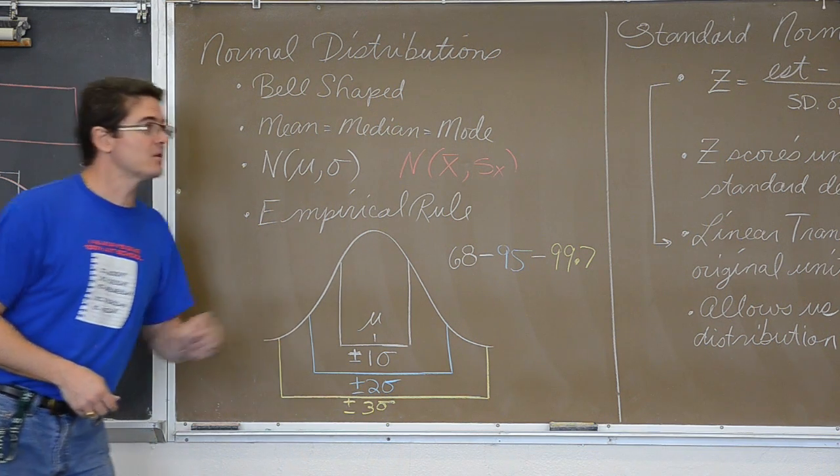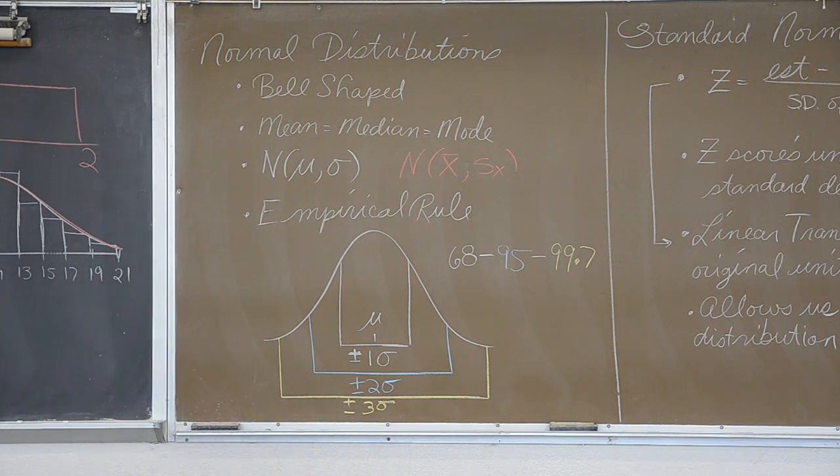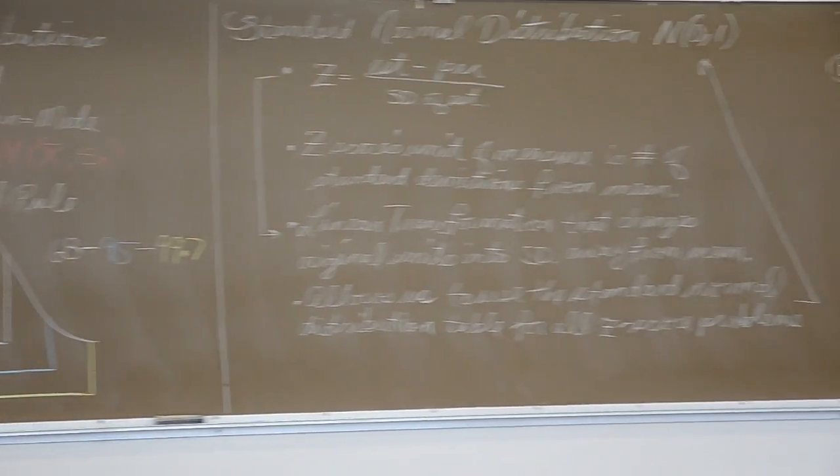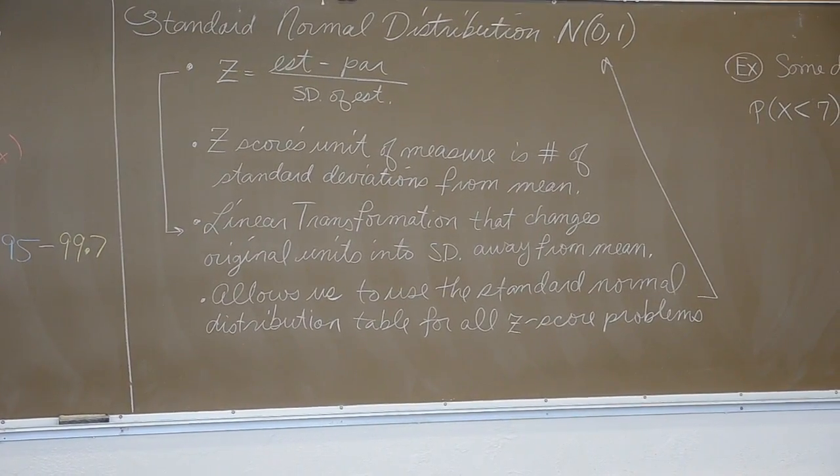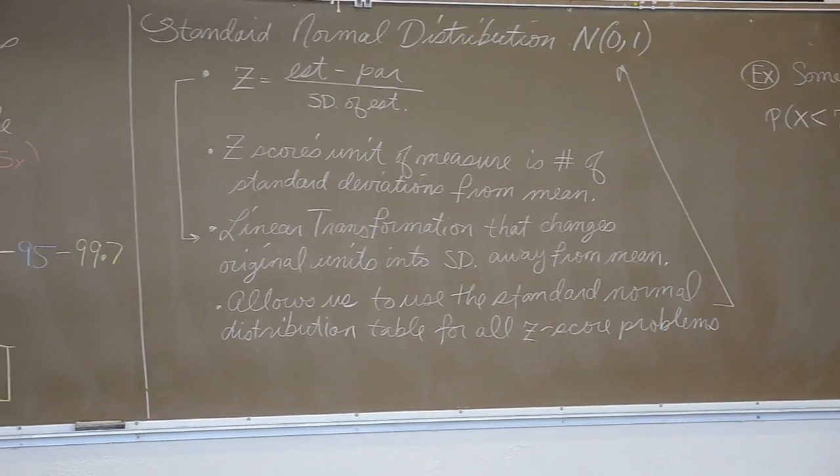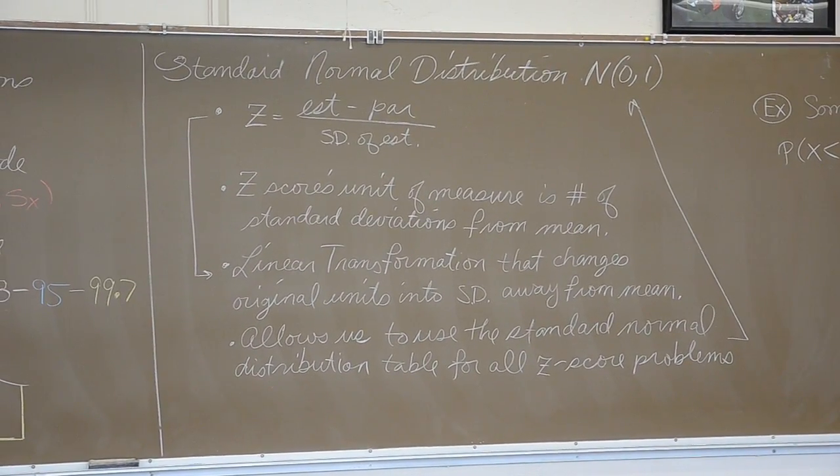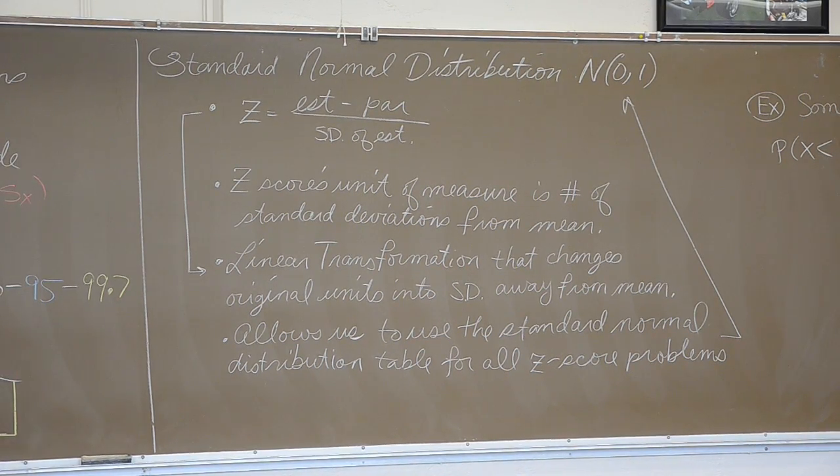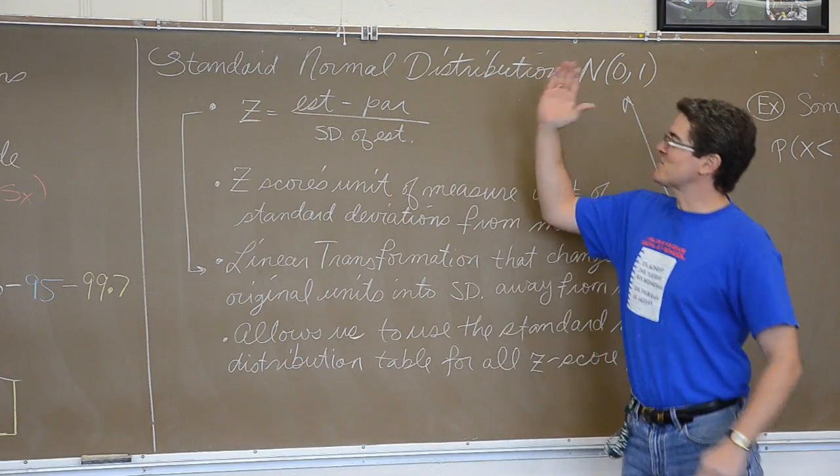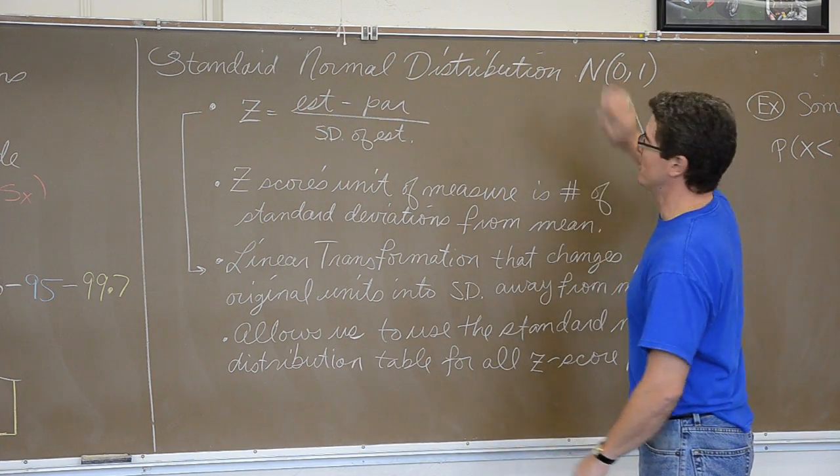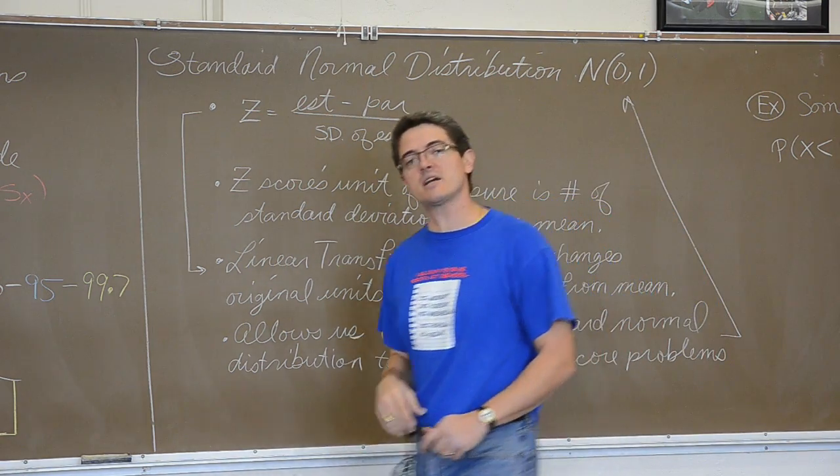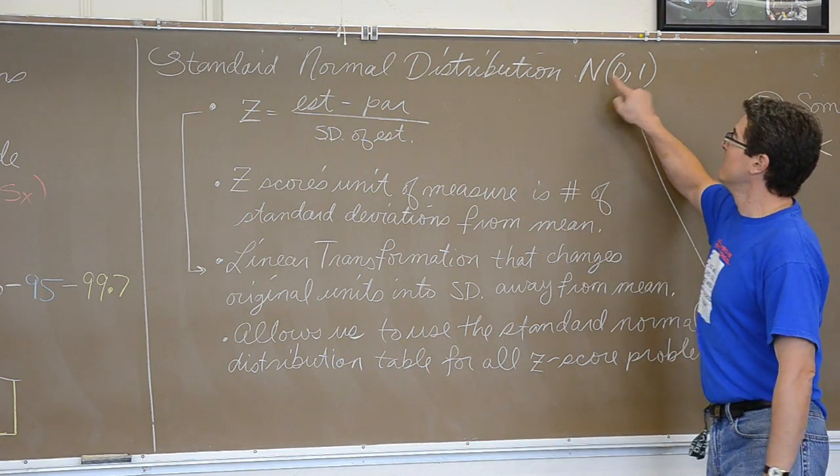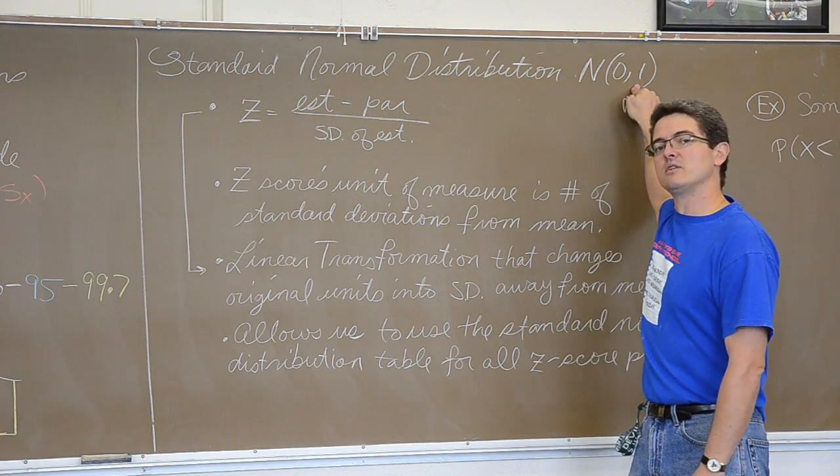We are going to move on to standard normal distributions and standardizing values. Standard normal distribution - this is the chart in your textbook. You will see a z-score chart in the front of your textbook. It will have a normal distribution, the normal bell curve. It will have a mean of zero and a standard deviation of one.